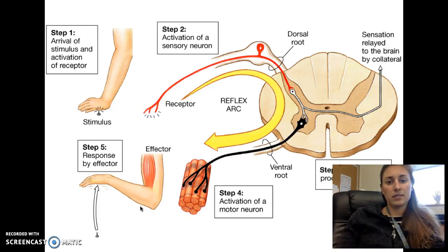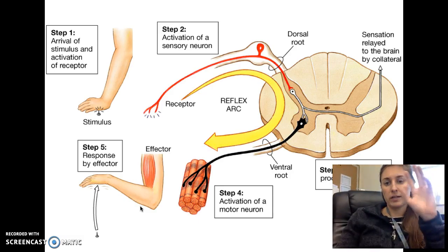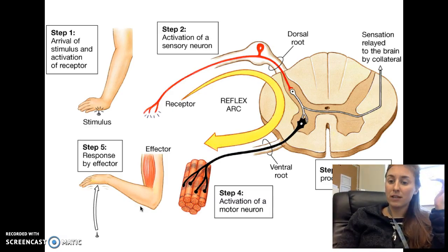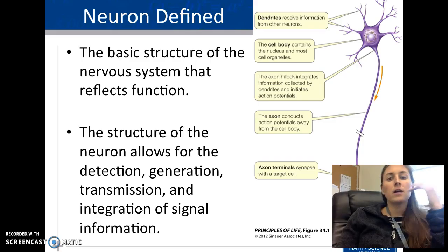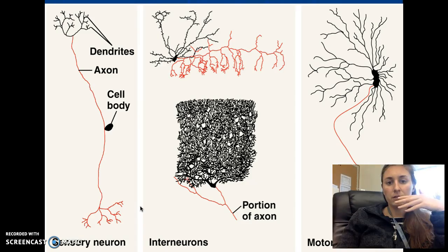The receptor signal goes in and hits the dorsal root, right at the vertebrae. It goes to the brain, which determines what we're going to do, and then the ventral root activates the response. This is called a reflex arc. The neuron is the functional unit of the nervous system — it sends information.